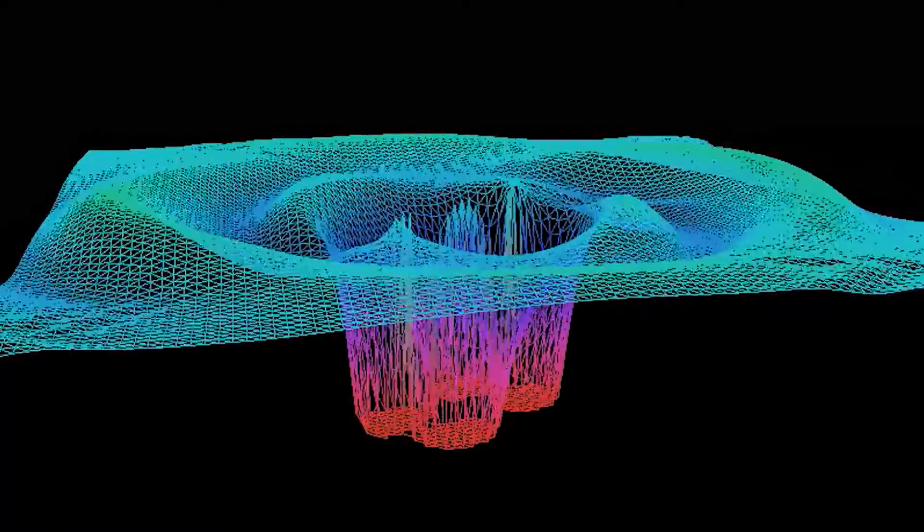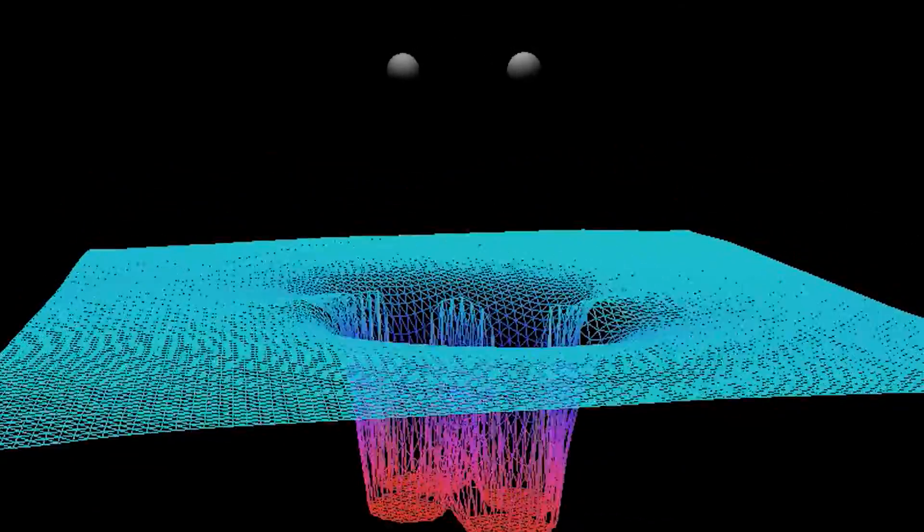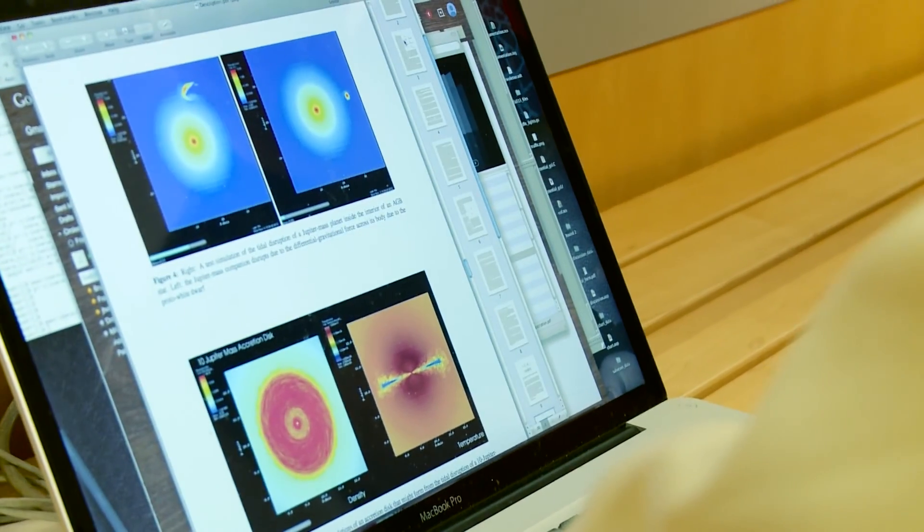Gravitational waves is among the most amazing predictions of the theory of Einstein's general relativity. Gravitational waves are disturbances of space-time produced by the collisions of astrophysical objects like binary black holes and neutron stars.